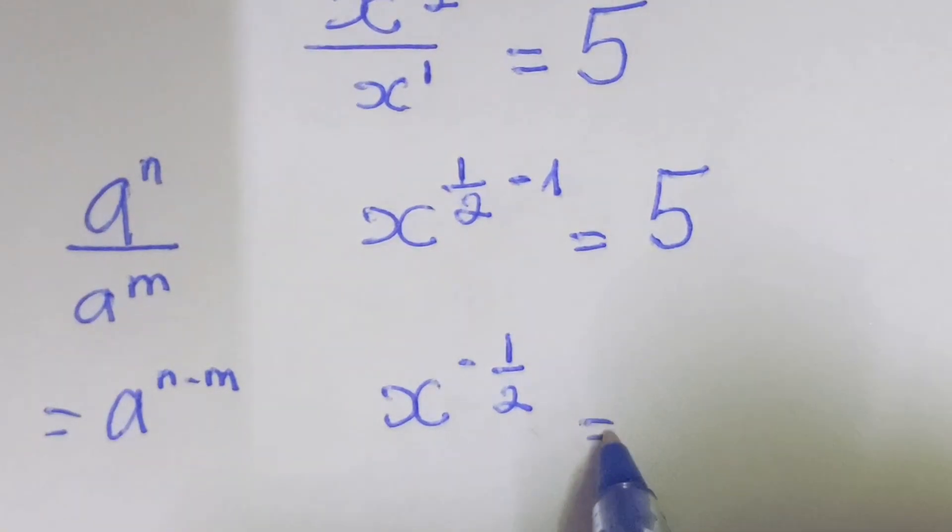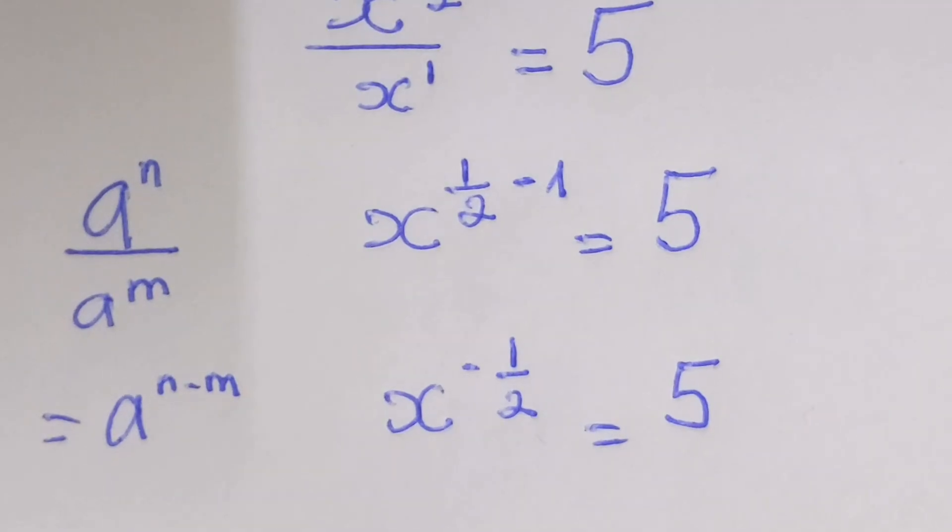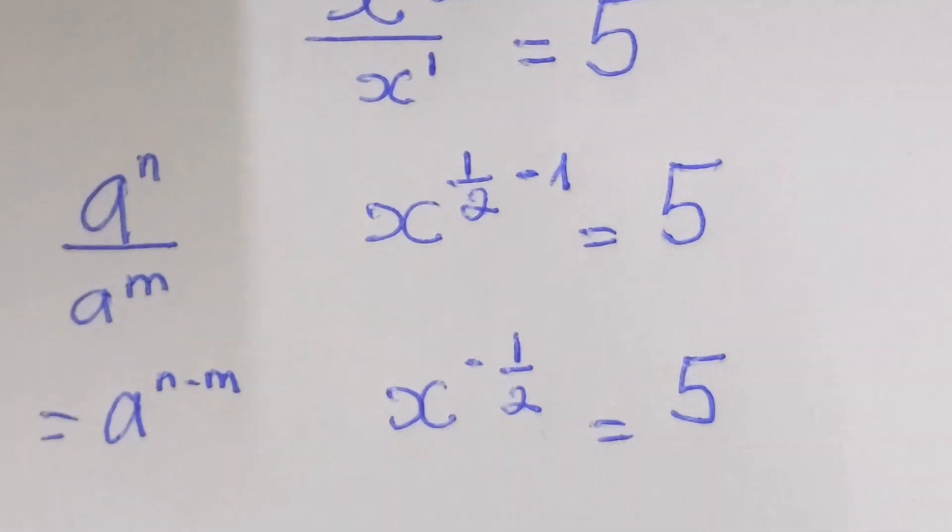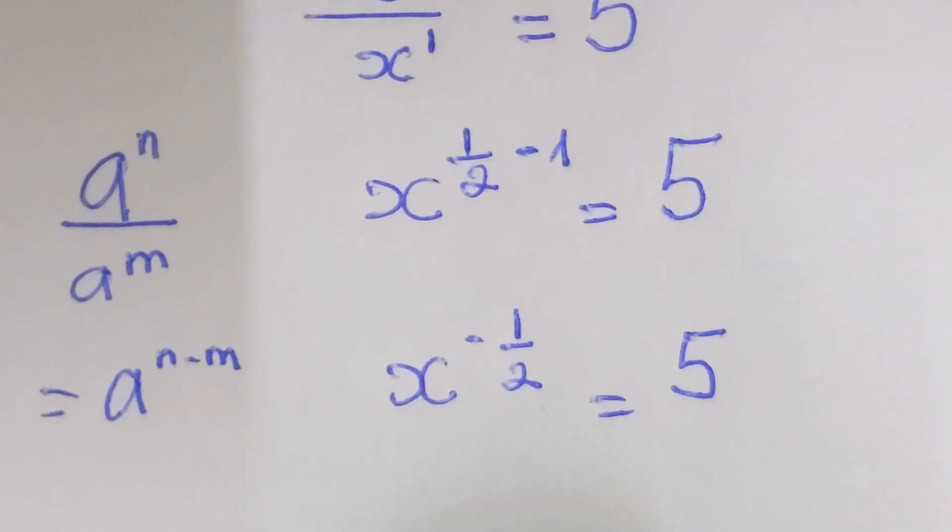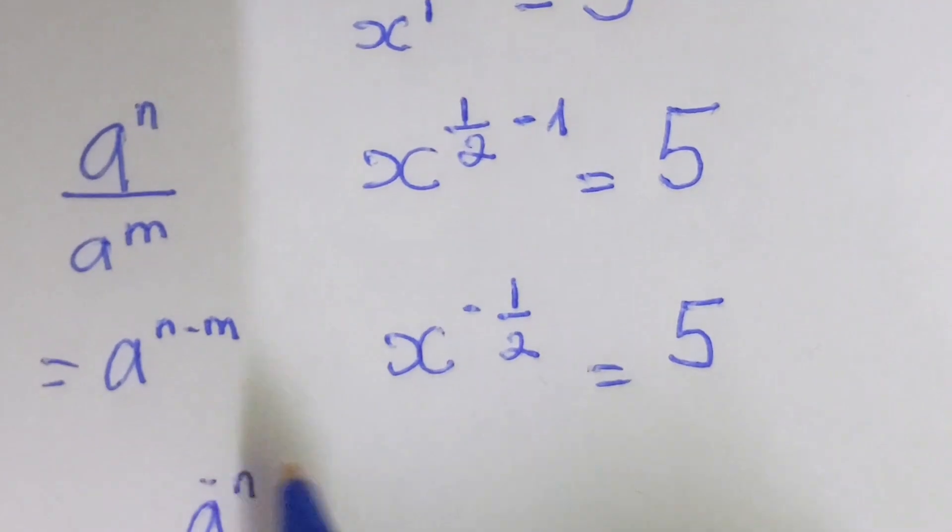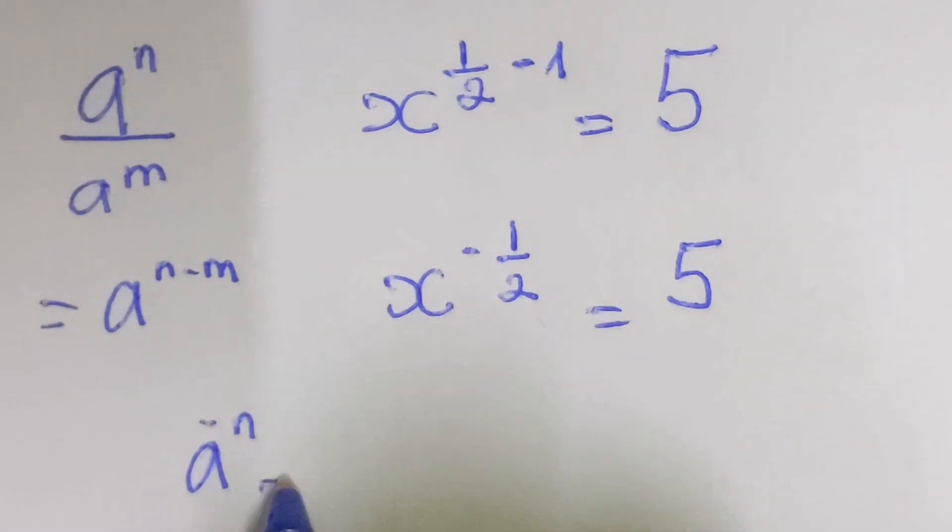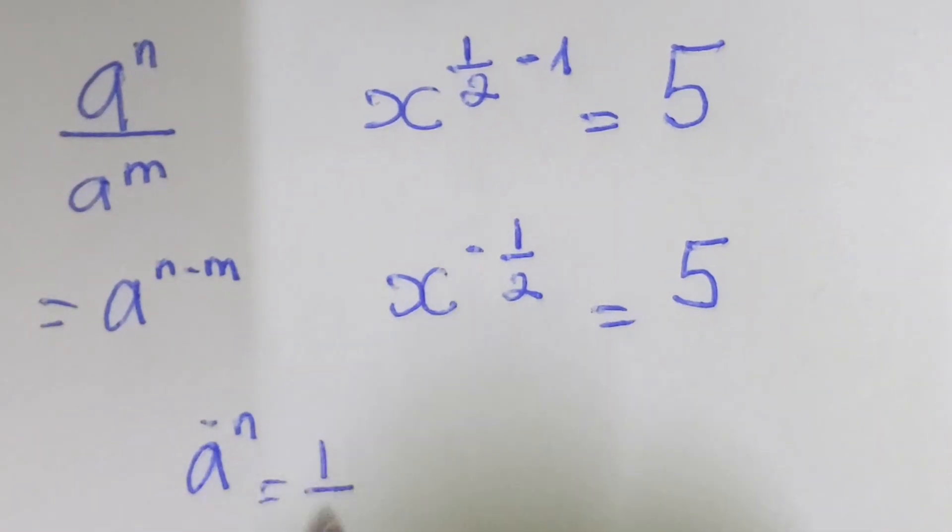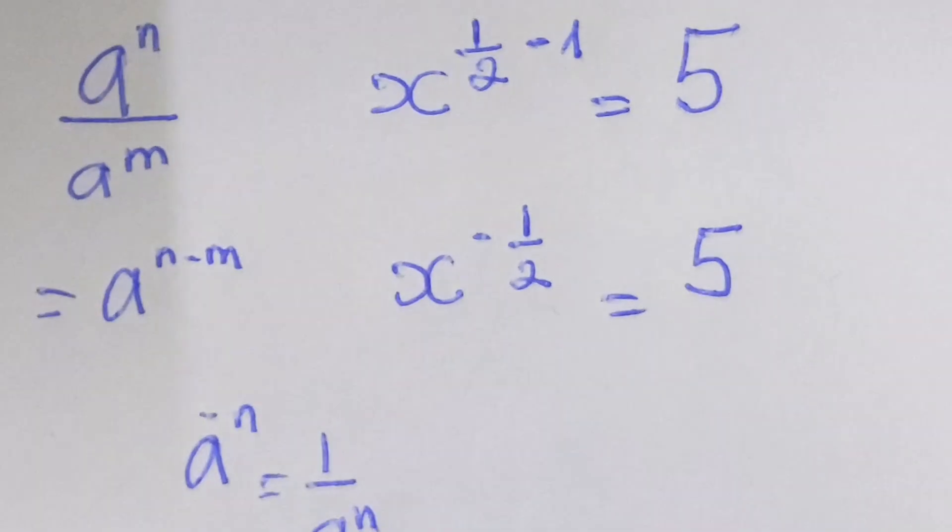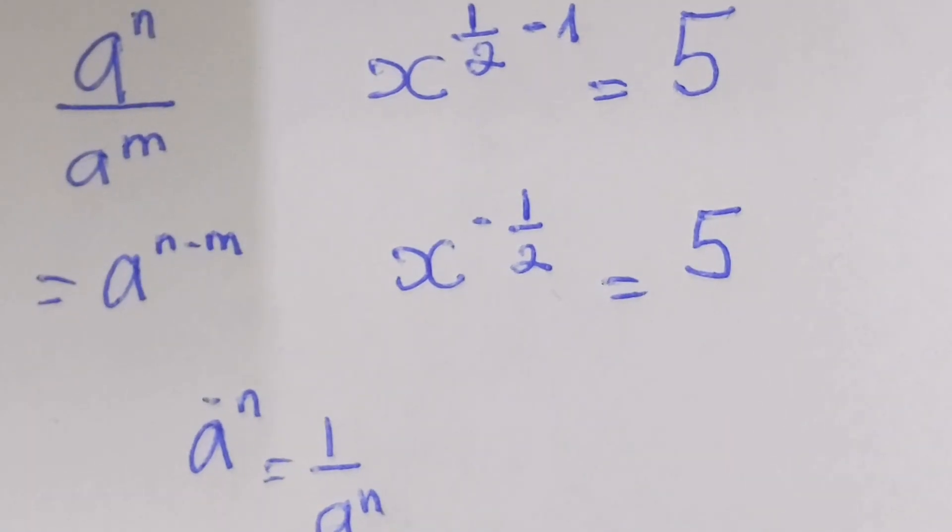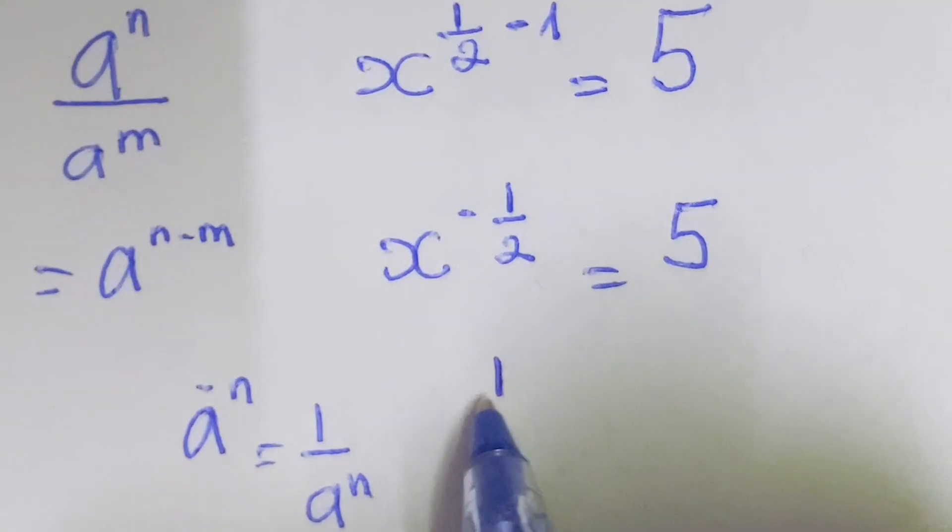Then after, if you have a number which it says that a power negative n, this is equal to 1 over a power n.